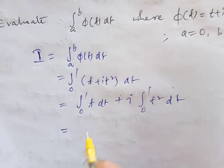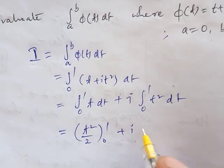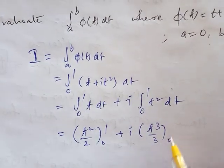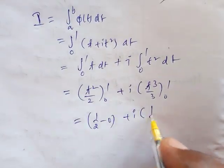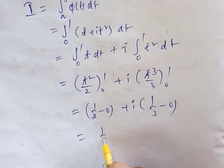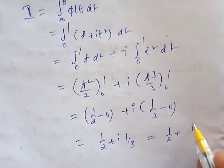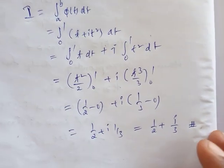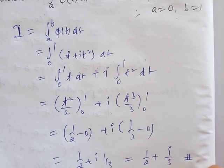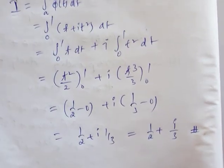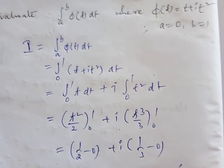Integrating, the integral of t is t²/2, evaluated from 0 to 1. Plus i times the integral of t², which is t³/3, evaluated from 0 to 1. So the value is (1/2 − 0) + i·(1/3 − 0). Finally, the answer is 1/2 + i/3. This is the integral value of φ(t) = t + i·t² on the interval 0 to 1.